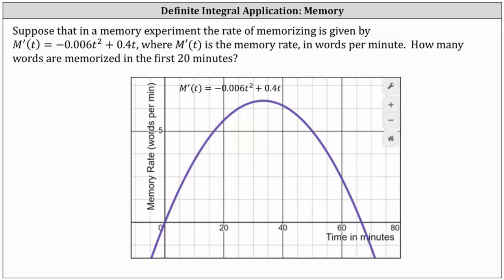The number of words memorized in the first 20 minutes is equal to the area bounded by the memory rate function and the x-axis over the closed interval from 0 to 20 minutes. Let's go ahead and shade this area.